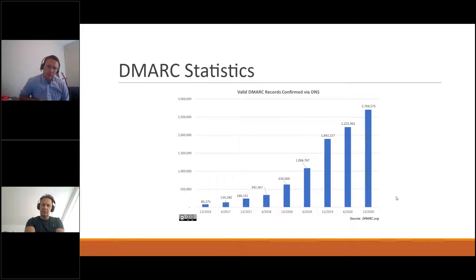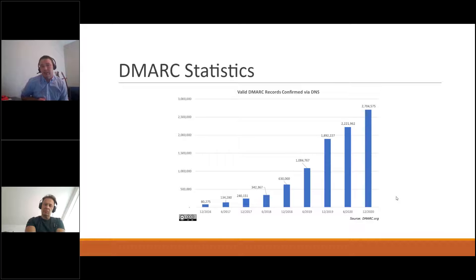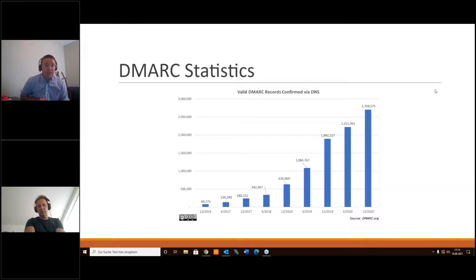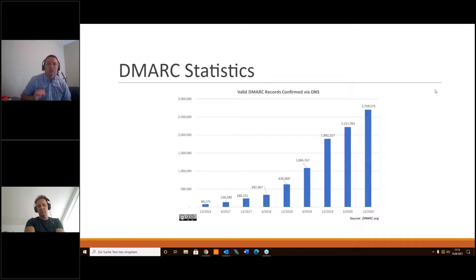This chart shows the growth of DMARC over the years, from DMARC.org, which publishes it annually. You can see incredible growth — when I first started working on DMARC things, it was still in the hundreds of thousands; now we're up to 3 million domains. That's incredible growth over the last four or five years, and it seems to still be growing at a fairly rapid pace, which underscores the importance of DMARC and that senders understand the value.